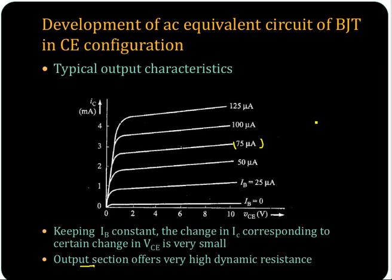The output resistance is delta VCE by delta IC. IC changes very little, so since the denominator is small, the output resistance is very high. So this is offering a very high dynamic resistance.